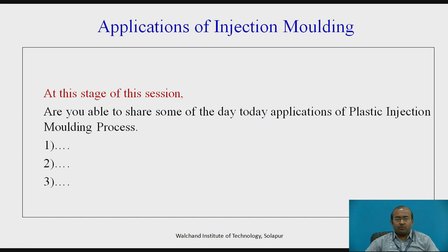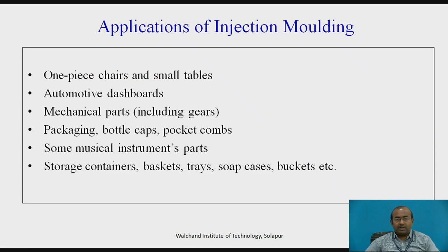Now let us see the applications of injection molding. Are you able to share some day-to-day applications of the plastic injection molding process? With knowledge of the process, I suppose you have enlisted some. Let me share some applications: one-piece chairs and small tables, automotive dashboards, mechanical parts like gears, packaging material, bottle caps, pocket combs, musical instrument parts, storage containers, baskets, trays, soap cases, buckets. These cover both technical and domestic products produced by injection molding.